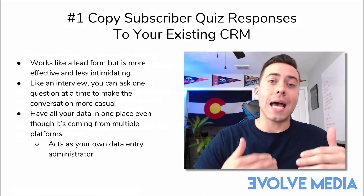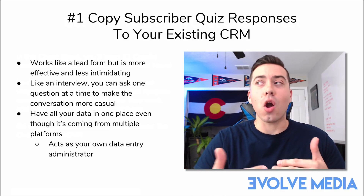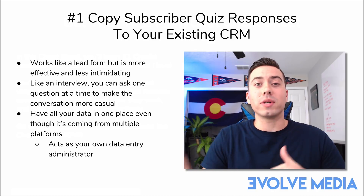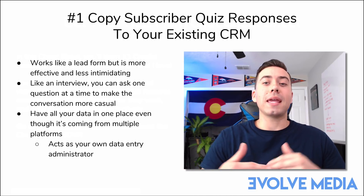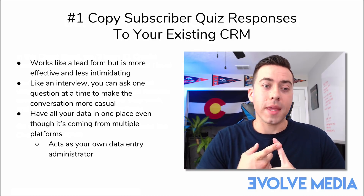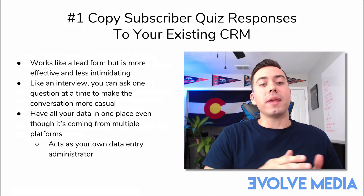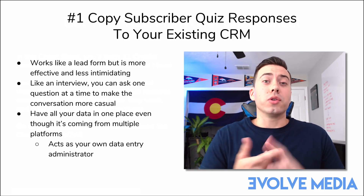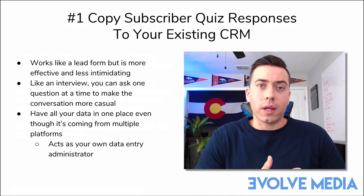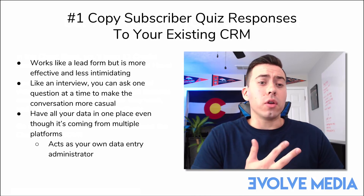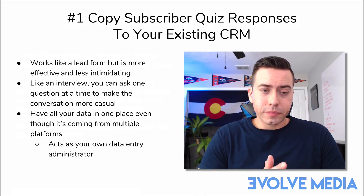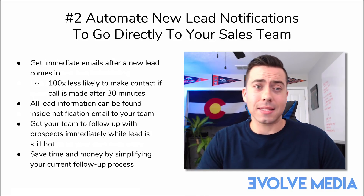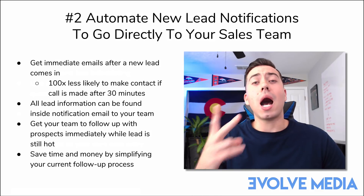When you're asking questions one at a time, they don't know they're going to end up answering 20 questions. So you're able to get more information from them and send that over to somewhere that really matters — whether it's your CRM, a Google Sheet, or an email notification to your sales team. You can do all of this with ManyChat and Zapier.